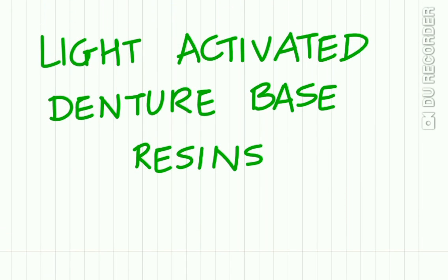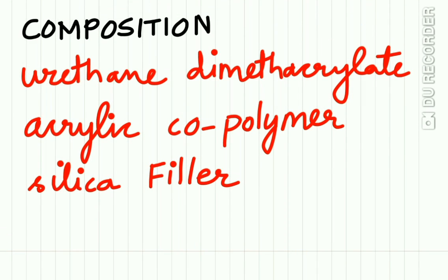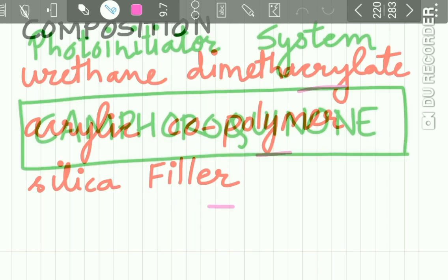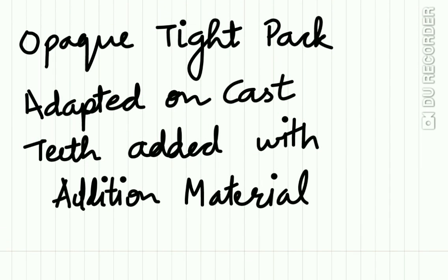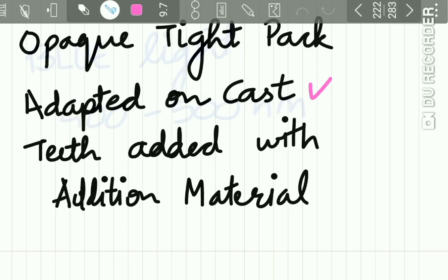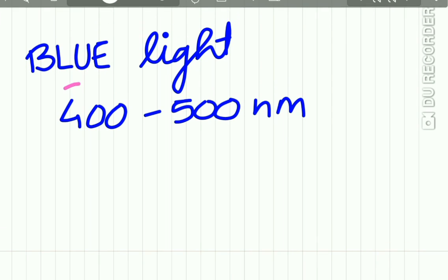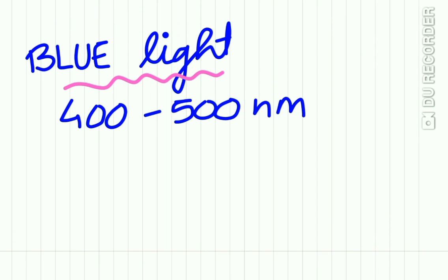Light activated denture base resins contain urethane dimethacrylate, acrylic copolymers, silica filler, and a photo initiator system — camphoroquinone — which enables light activation. They are packed in opaque containers. The material is adapted to the cast, teeth are added, and polymerization occurs in closed chambers containing blue light of 400 to 500 nm wavelength.